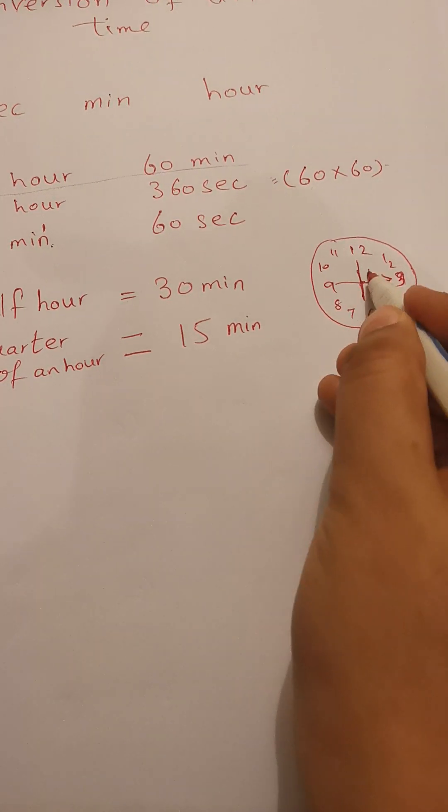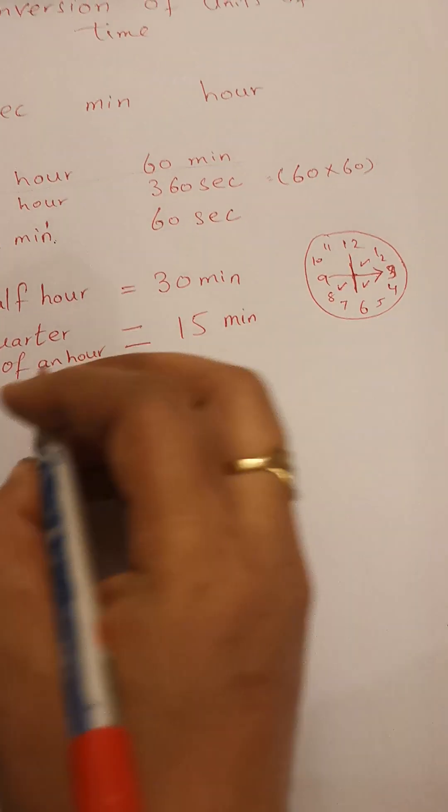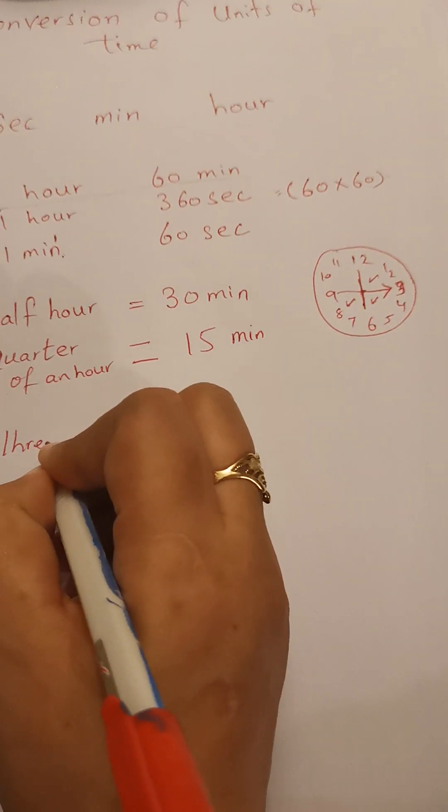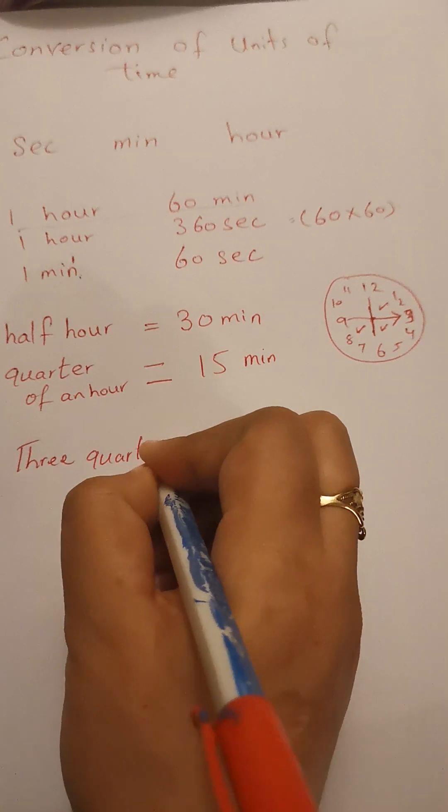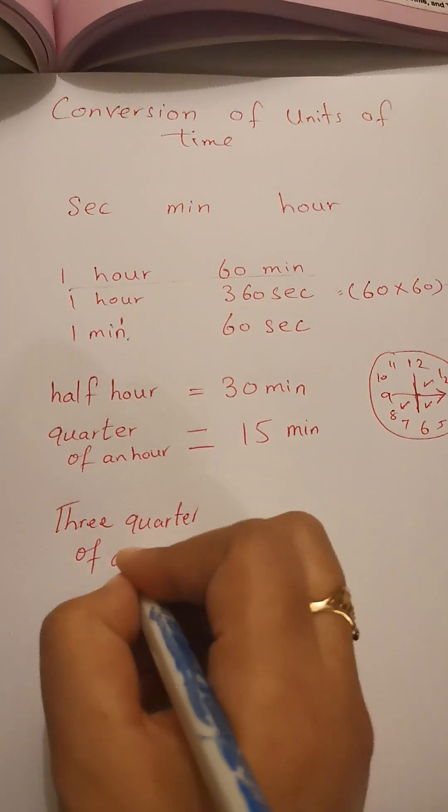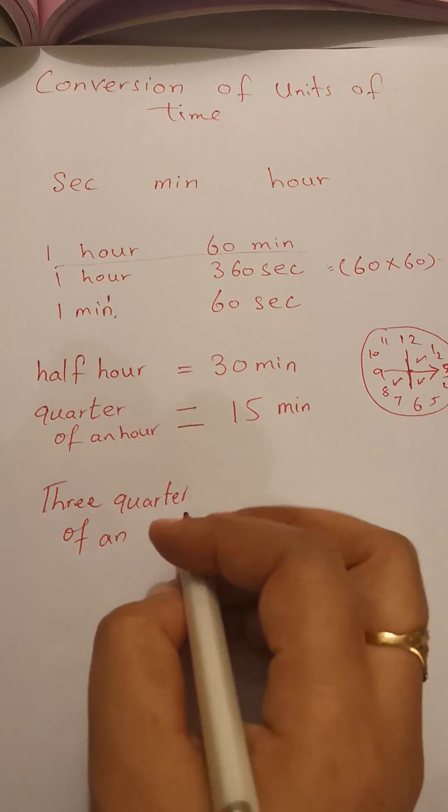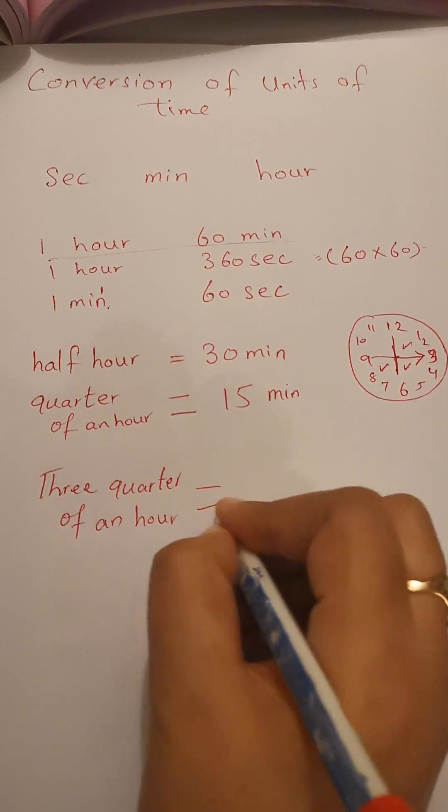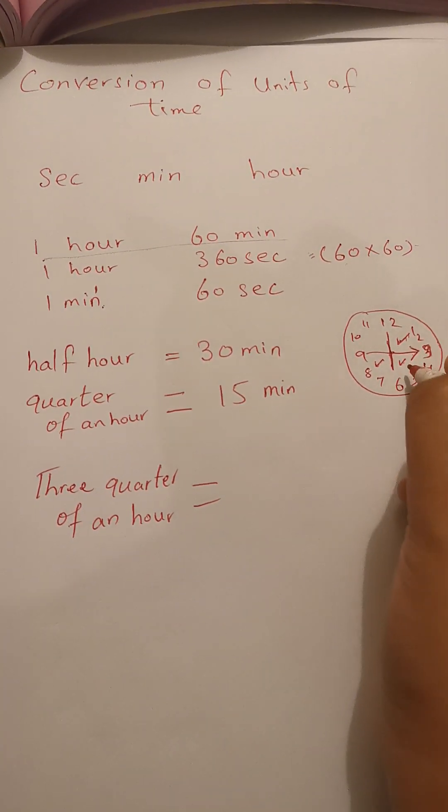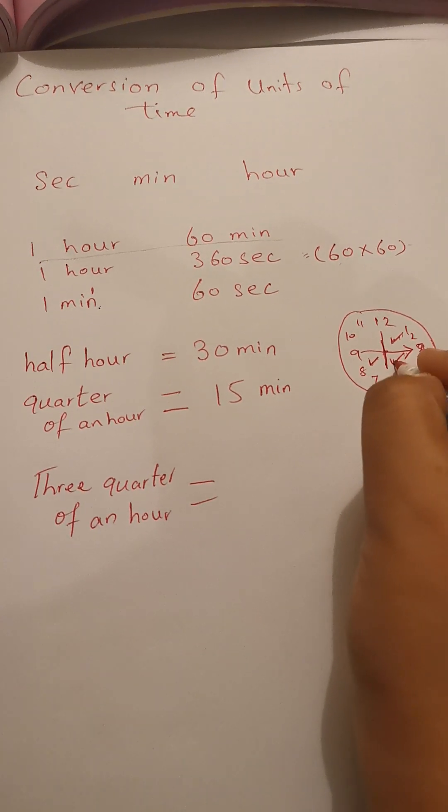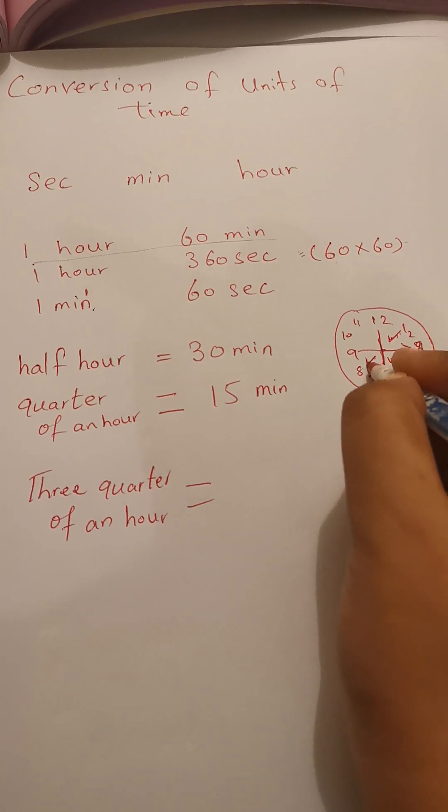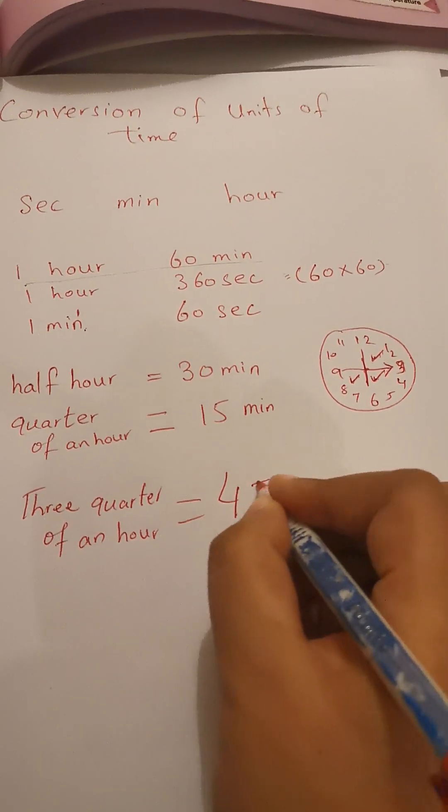three quarters - first, second, third - three quarters of an hour means 15 minutes here, 15 minutes here, 15 minutes here. So 15 plus 15 is 30, 30 plus 15 is 45 minutes.